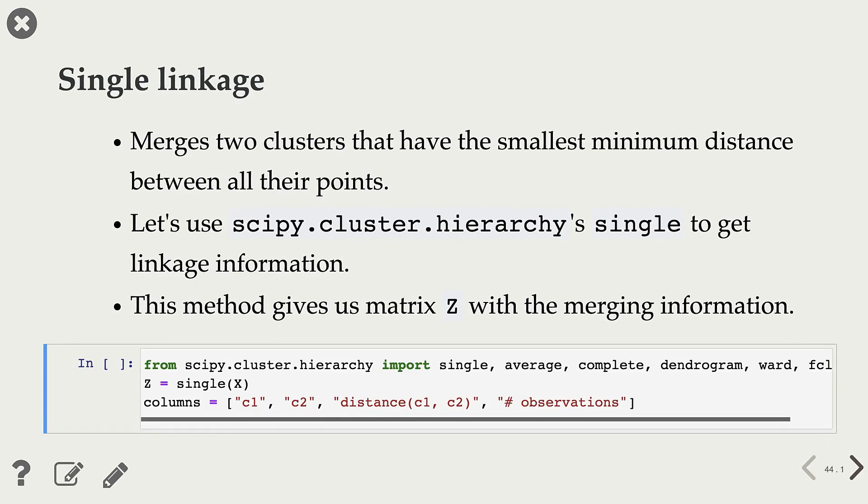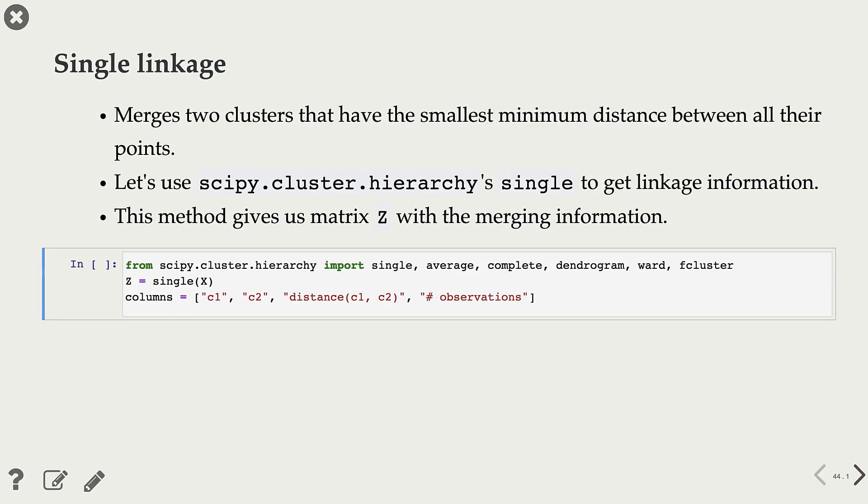Now, if you want to create a dendrogram on your data set, first thing you need to do is you need to create this linkage matrix. As I mentioned before, scikit-learn doesn't really have this, so we will be using scipy.cluster.hierarchy. And you need to import these linkage criteria from this package, so single, average, complete, and ward.